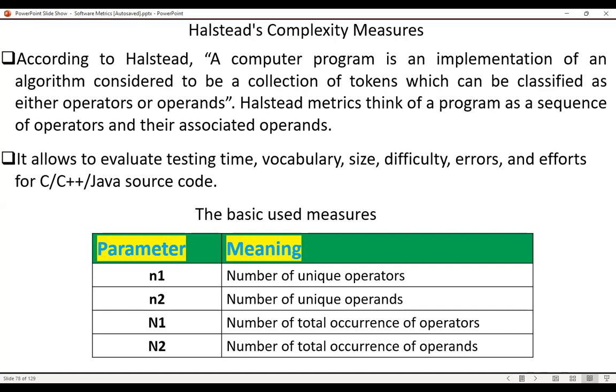According to Halstead, a computer program is an implementation of an algorithm considered to be a collection of tokens which can be classified as either operators or operands.